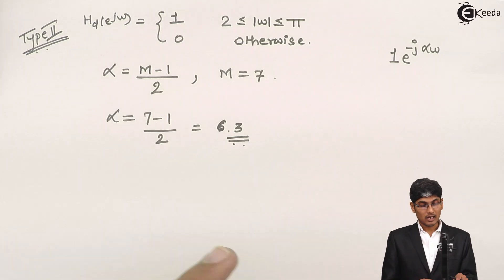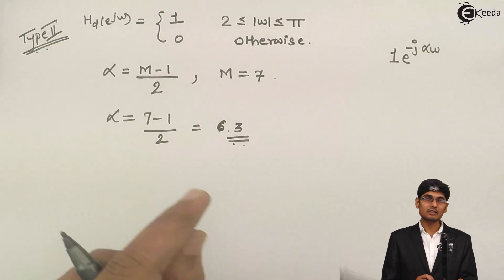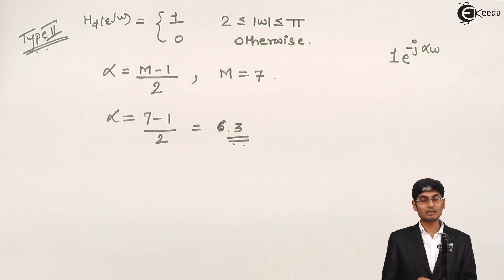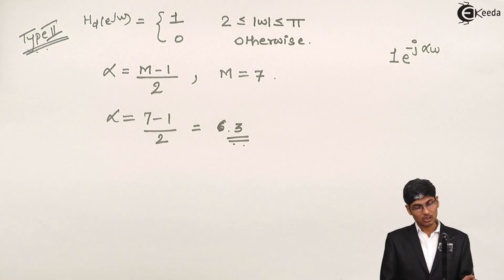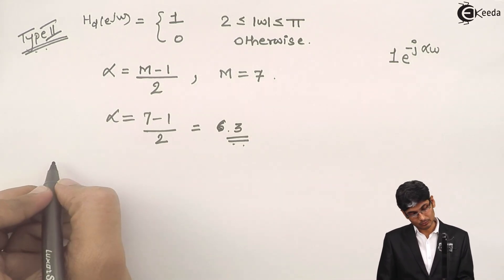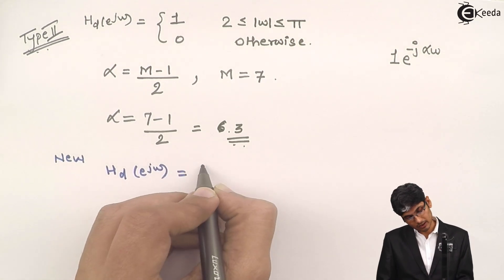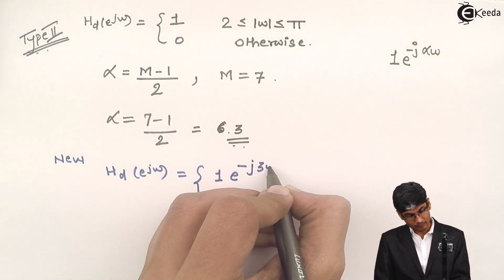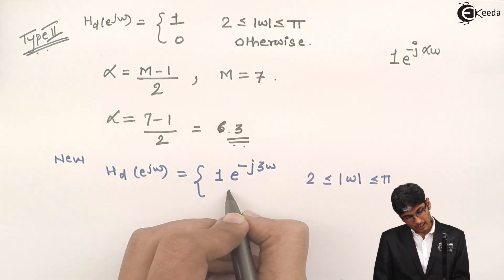Now, very important: α = (M−1)/2 will only be valid if your M is an odd integer. If M is an even integer, this formula will result in a fractional answer, which is not valid. So always keep M to be odd if you want to use α = (M−1)/2. We got α = 3, so H_d(e^jω) = 1 · e^(−j3ω) for 2 ≤ |ω| ≤ π and 0 otherwise.